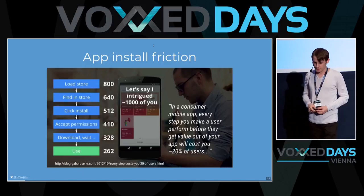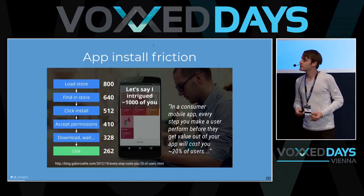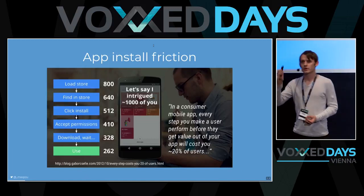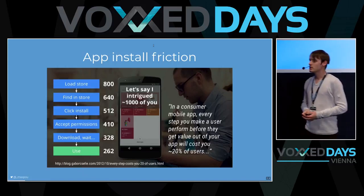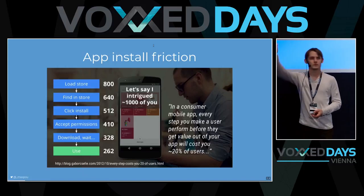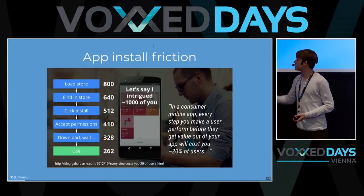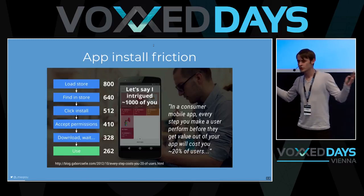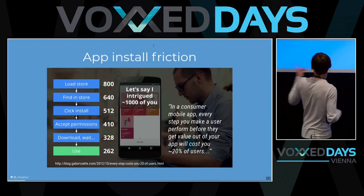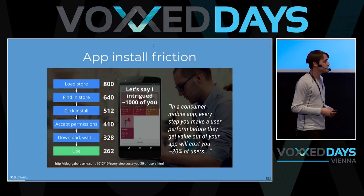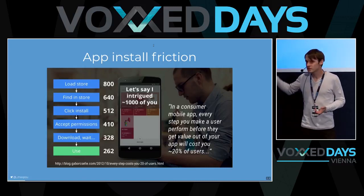There is another problem. If your company has an app, it's hard to reach people. On every step, you are losing 20% of users — you have to find an app, you lose 20 users; you click on the detail, you lose 20 users. So at the end, if you want to reach 1,000 users, only about 262, according to this study, are going to use the app.